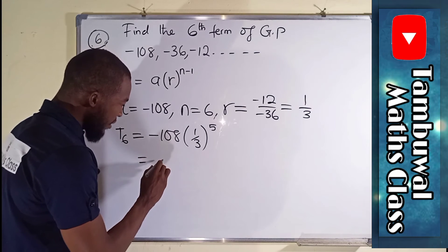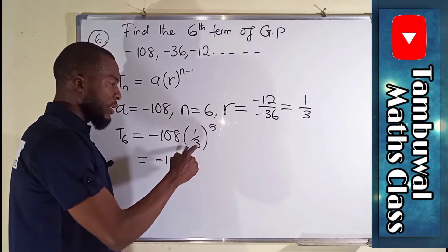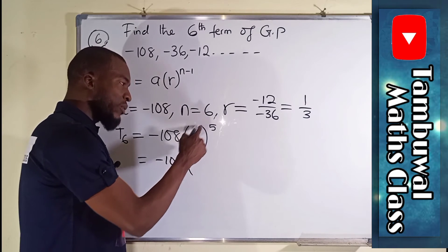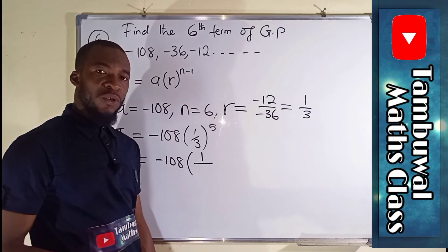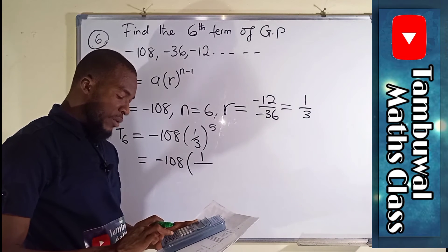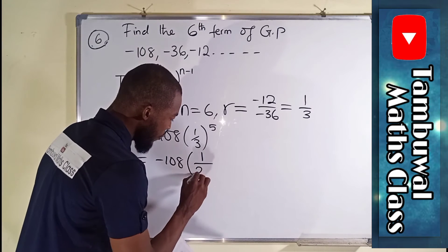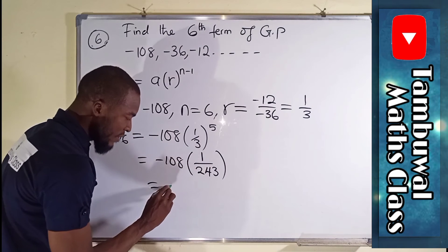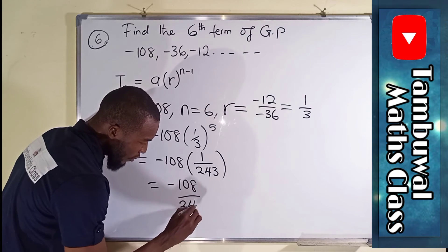So this is the same thing as saying minus 108 multiplied by 1 over 3 to the power of 5. And this 5 is affecting numerator and denominator. 1 to the power of 5 is the same thing as 1. But 3 to the power of 5, let us see what it's going to give us. 3 to the power of 5 is 243. So we have 243. If you expand this, it's the same thing as saying this times 1 is still 108 divided by 243.